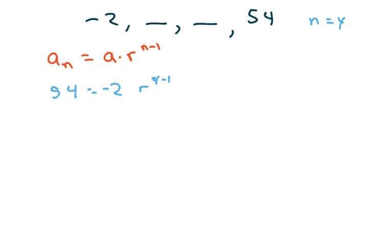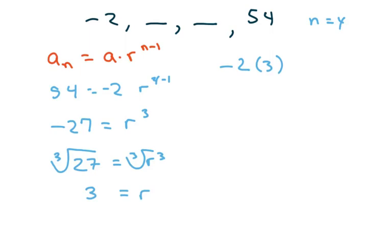Divide both sides by negative 2 and you get negative 27 equals r cubed. Then cube root both sides. And you get r equals 3. So basically you're just multiplying everything by 3. Negative 2 times 3 is negative 6. Let me write it out here. Negative 6 times 3 is negative 27.